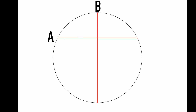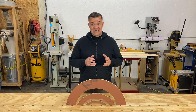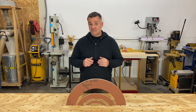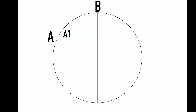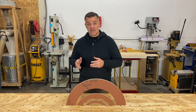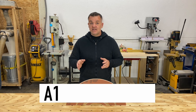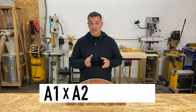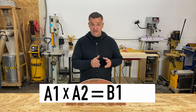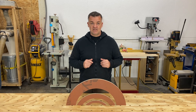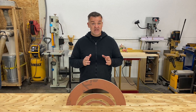So what does the intersecting chord theorem say? When you have any two chords — call them chord A and chord B — and you split each chord into two segments at the intersection, giving you a1, a2, b1, and b2, the theorem states: a1 times a2 equals b1 times b2.